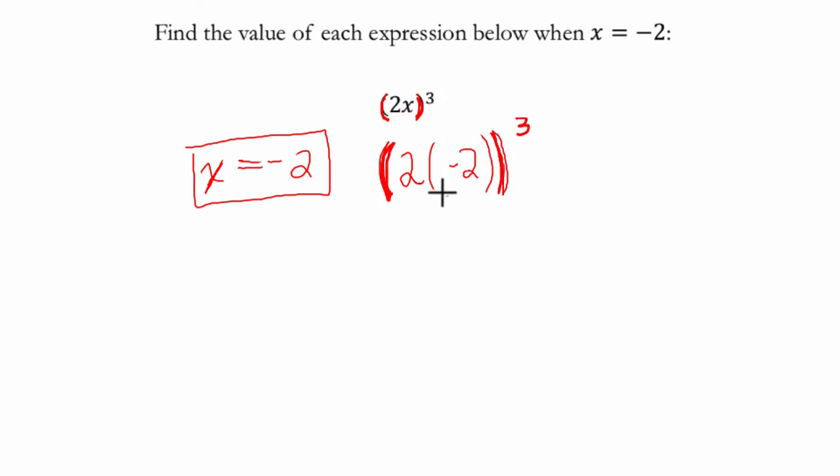So now we multiply inside the parentheses. With our order of operations, it tells me to do 2 times negative 2. That's negative 4.